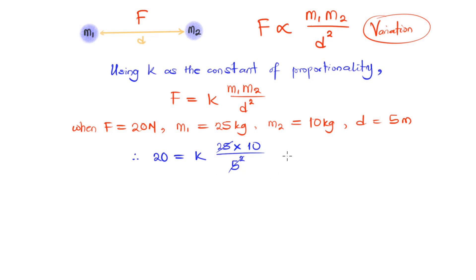5 raised to power 2 is 25, so 25 can cancel 25, so that we have 20 is equal to 10K. If we divide both sides by 10, K is 2. So the expression for F in terms of M1, M2 and D is 2 multiplied by M1, M2 over D raised to power 2. That is the expression for F that we are asked to find.